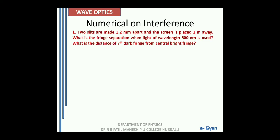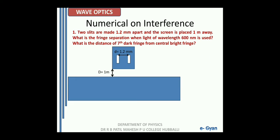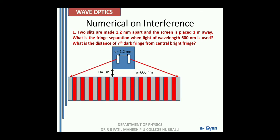The two slits are made 1.2 mm apart and the screen is placed 1 meter away. What is the fringe separation when the light of wavelength 600 nanometer is used? What is the distance of the 7th dark fringe from the central bright fringe? We have a double slit separated by distance 1.2 mm and a screen at a distance of 1 meter. The wavelength used is 600 nanometer.